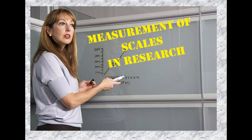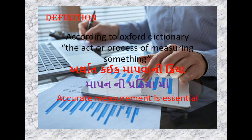Welcome to my YouTube channel. Today's topic is Measurement of Scales in Research. Let's begin with what measurement is. According to the Oxford Dictionary, measurement is the act or process of measuring something — that is, the activity of measuring something. In the process of measurement, accurate measurement is essential.